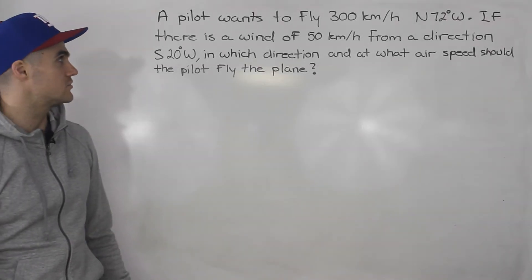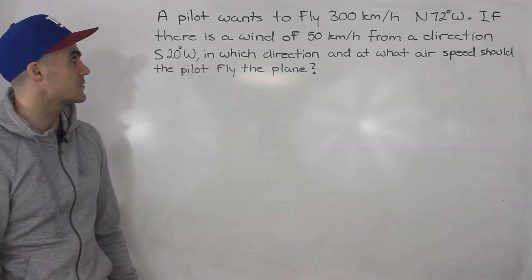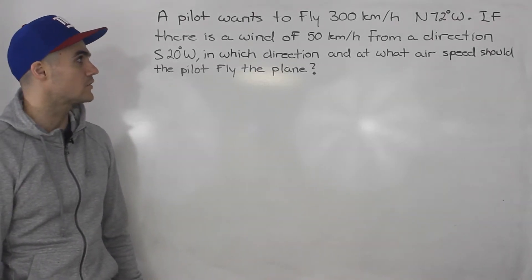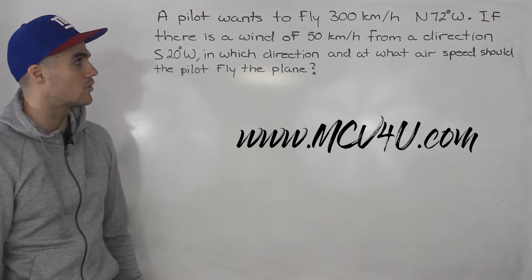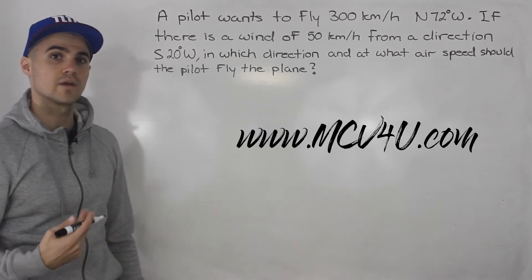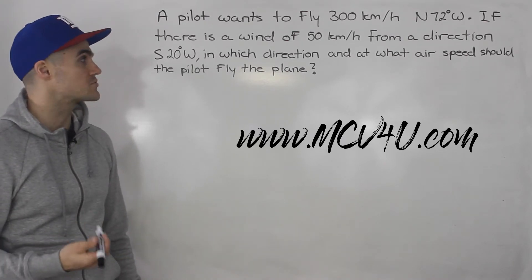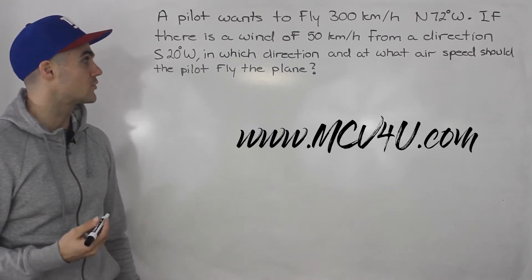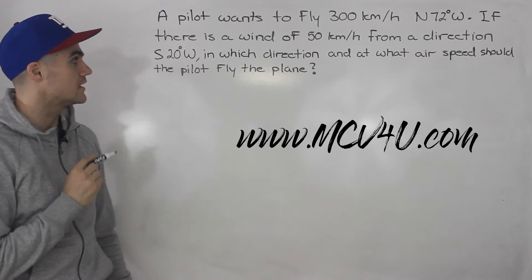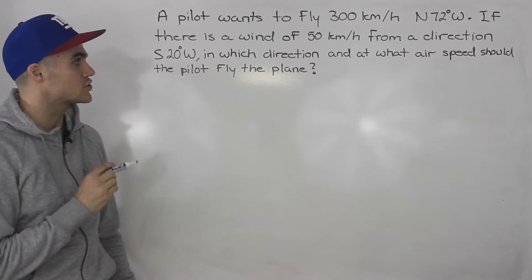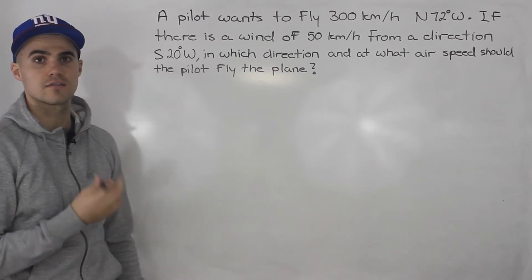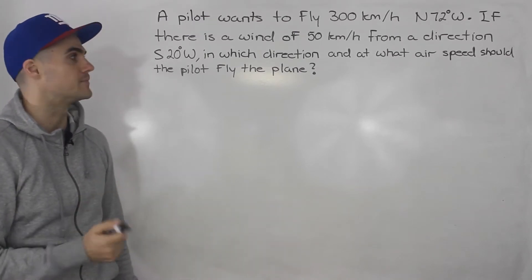Welcome back everybody. Moving on to the next example. So a pilot wants to fly 300 kilometers per hour north 72 degrees west. If there's a wind of 50 kilometers per hour from a direction of south 20 degrees west, in which direction and at what airspeed should the pilot fly the plane?